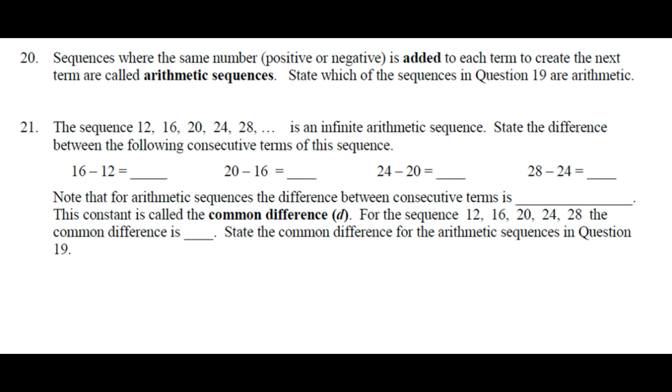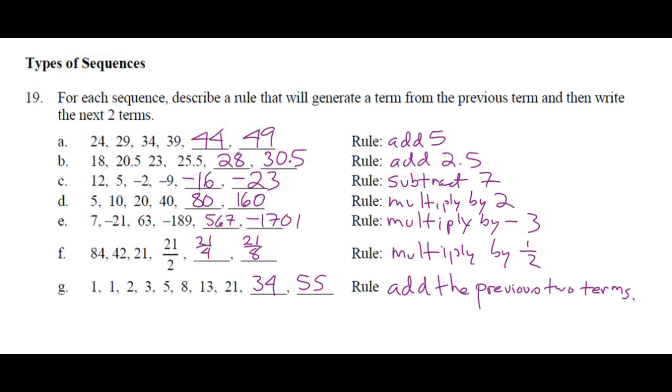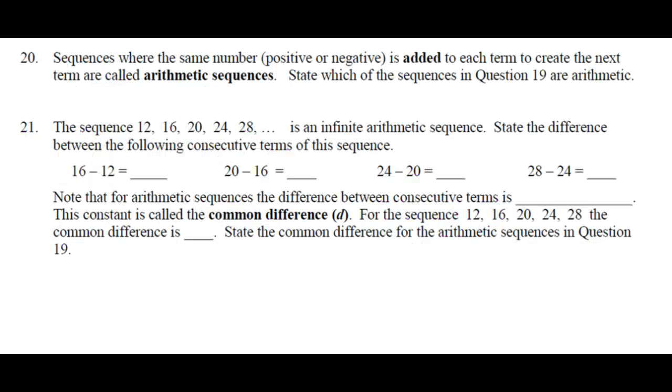Sequences where the same number, positive or negative, is added to each term to create the next term are called arithmetic sequences. Let's circle the arithmetic sequences. So is A arithmetic? Yes. Let's write a big A next. Is B arithmetic? Yes. Is C arithmetic? Yes. Is D arithmetic? Is E arithmetic? Is F arithmetic? Is G arithmetic? So we have three arithmetic sequences. State which: A, B, and C.